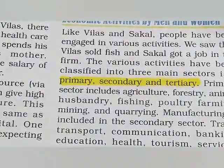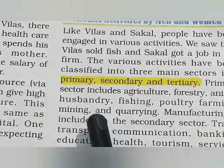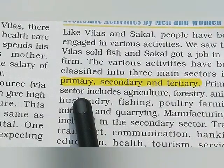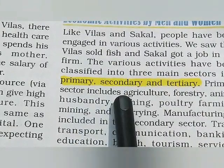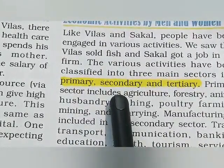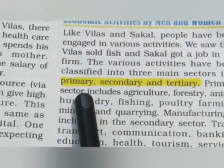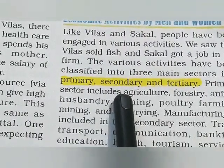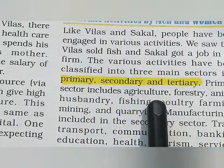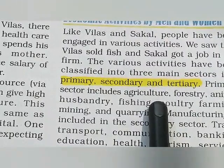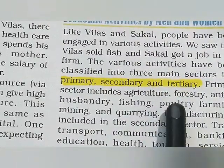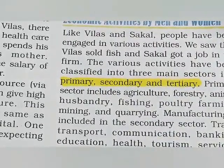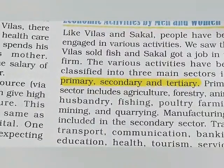So keep these things in mind: in the primary sector, it produces raw materials and forms the base for other sectors. The secondary sector modifies whatever we got from the primary sector — raw materials are converted; it is also called the manufacturing sector. In the tertiary sector, it provides services — all service-oriented activities come under tertiary activities. I hope all these three sectors are clear to all of you. Tomorrow we will discuss the remaining chapter. Thank you.